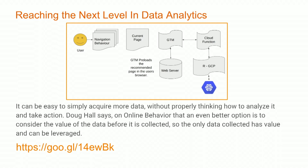Speaking of having data and using it, in order to get to the next level of data analytics, you have to understand what kind of data is coming in. Doug Hall of ConversionWorks did a guest post for Online Behavior — Daniel Weisberg's site. He said what you want is an understanding of the value of the data as you collect it. Don't just collect it for collecting's sake — know what you're going to do with it, what's the right type of data, and make sure you can leverage it so it has value. It's a long post, but it's worth it.